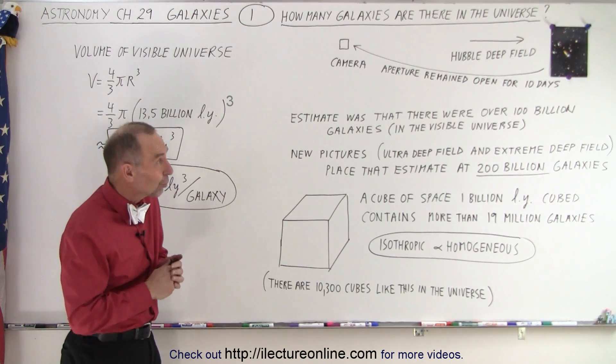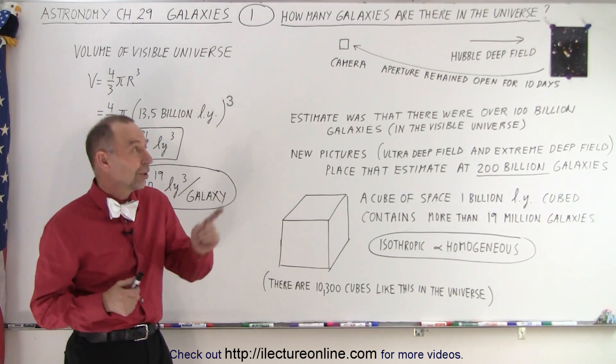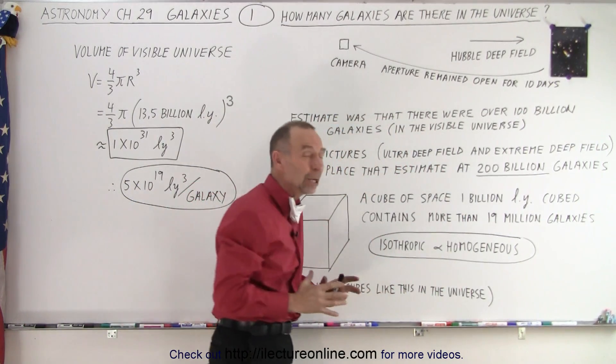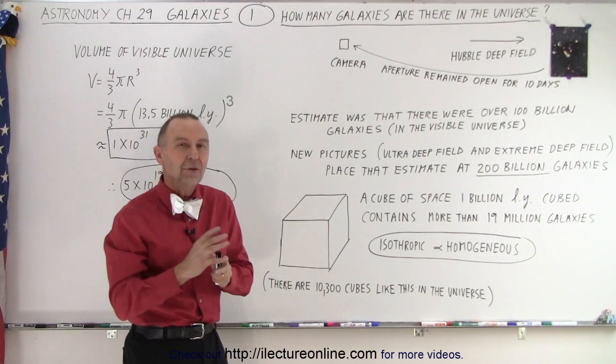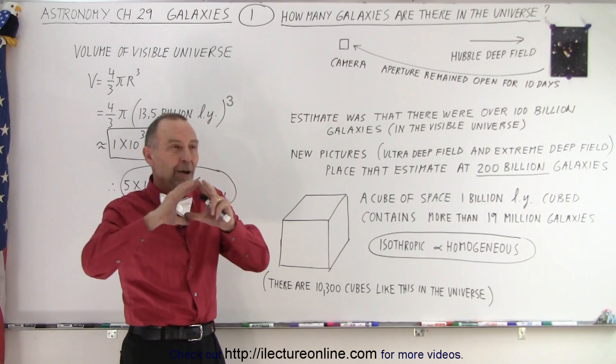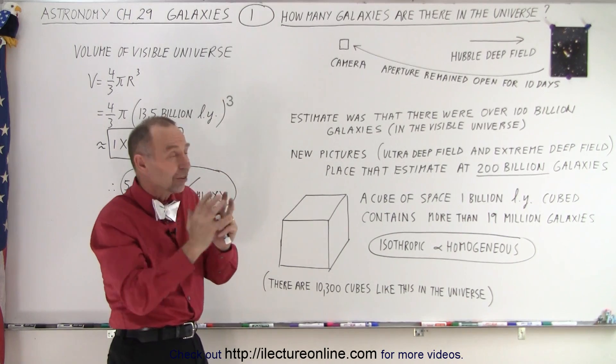And one of the pictures that we took with our telescope was the Hubble Deep Field Picture and there it is, a single picture containing well over a thousand galaxies. Now, how big of a space, how big of a portion of space did that contain?